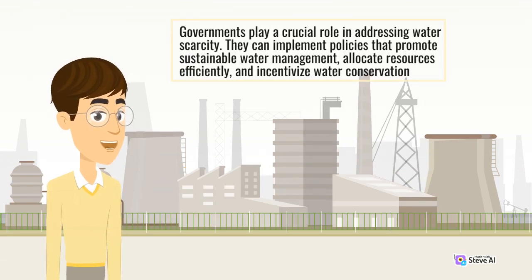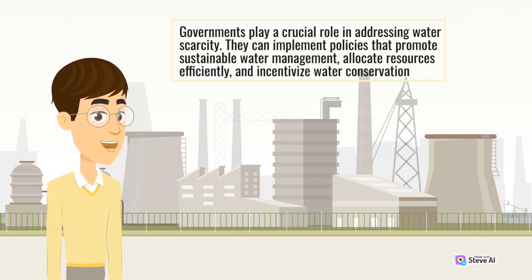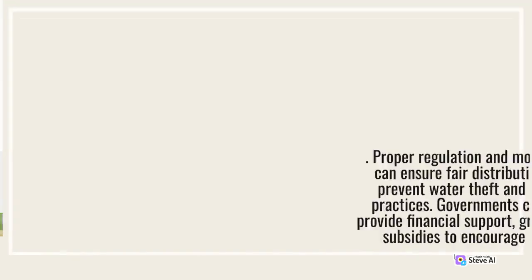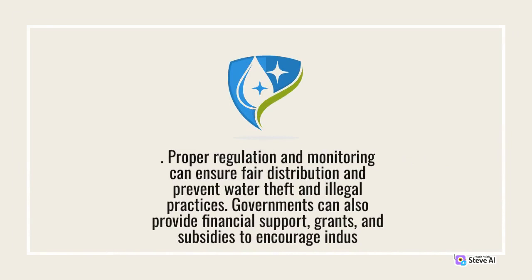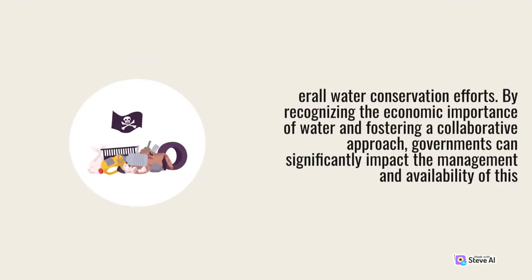Governments play a crucial role in addressing water scarcity. They can implement policies that promote sustainable water management, allocate resources efficiently, and incentivize water conservation. Proper regulation and monitoring can ensure fair distribution and prevent water theft and illegal practices. Governments can also provide financial support, grants, and subsidies to encourage industries and farmers to adopt water-saving technologies and practices. Public awareness campaigns, education, and participation in water conservation programs can empower individuals to contribute to overall water conservation efforts. By recognizing the economic importance of water and fostering a collaborative approach, governments can significantly impact the management and availability of this vital resource.